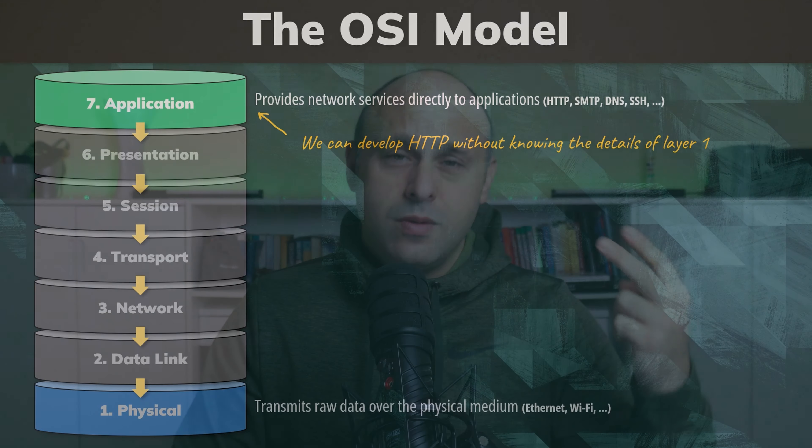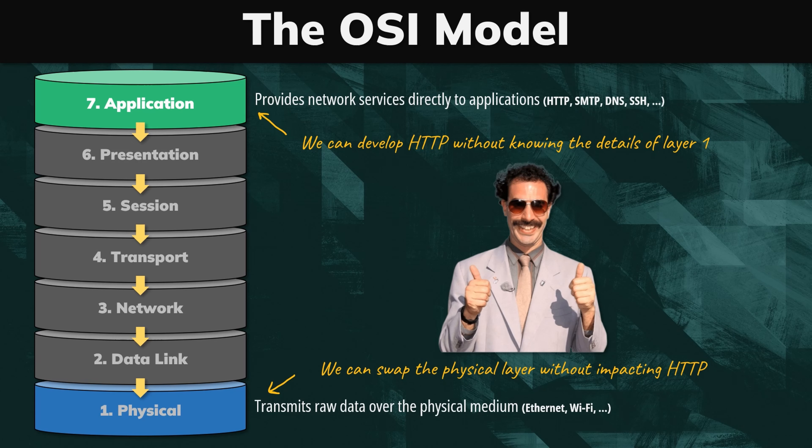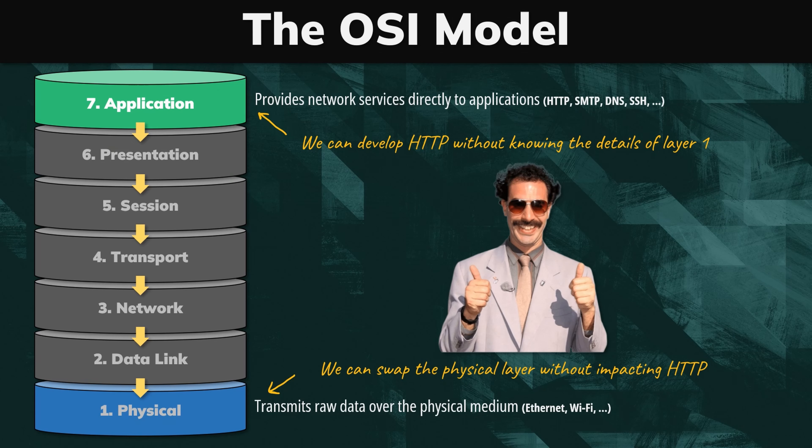We can also swap the implementations of a layer without having to rewrite all the other layers. If we stick to layer one, our data can travel over Ethernet, coaxial, fiber optic cables, or even radio waves, but that has absolutely no impact on how we define the HTTP protocol — the two concerns are decoupled.